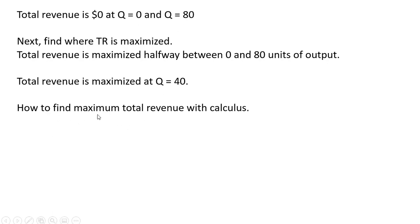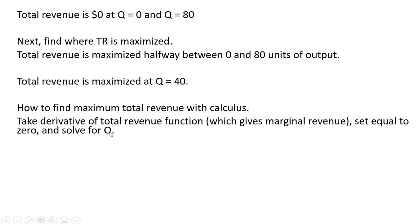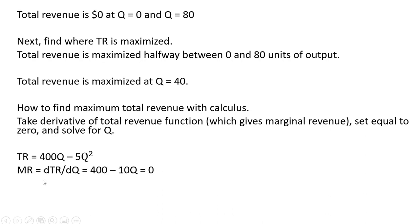Here's how to find maximum total revenue with calculus — you don't need to do this, but with calculus we take the derivative of the total revenue function, which gives marginal revenue. Setting marginal revenue equal to zero and solving for Q, we get Q equals 40, just like we found before.